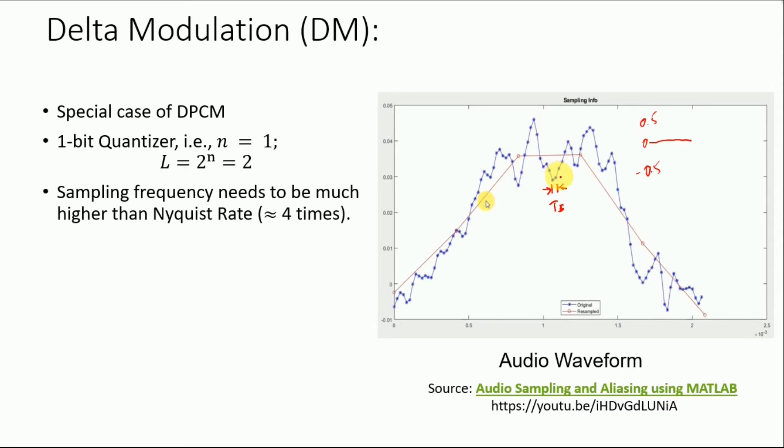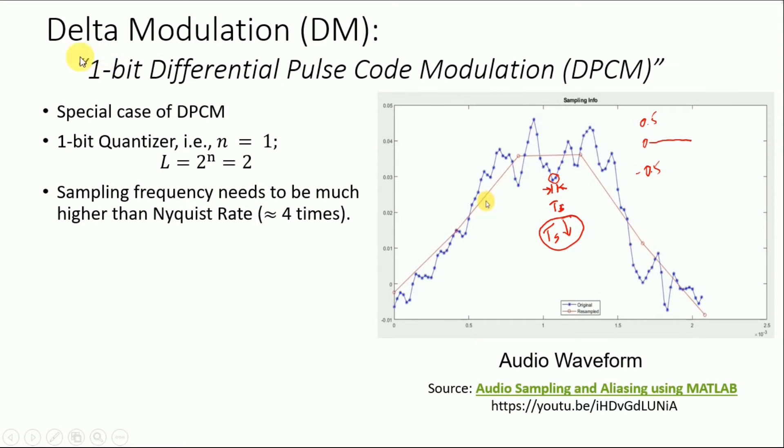So we can make use of one bit quantizer. That is the Delta modulation. So in short, Delta modulation is nothing but one bit differential pulse code modulation.